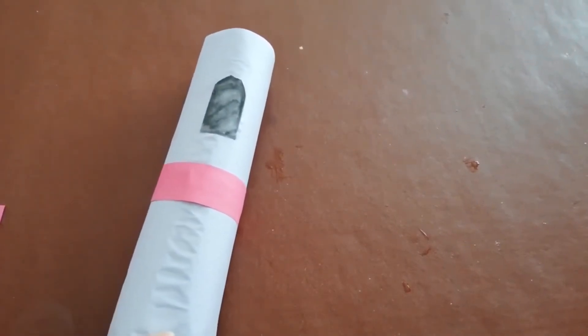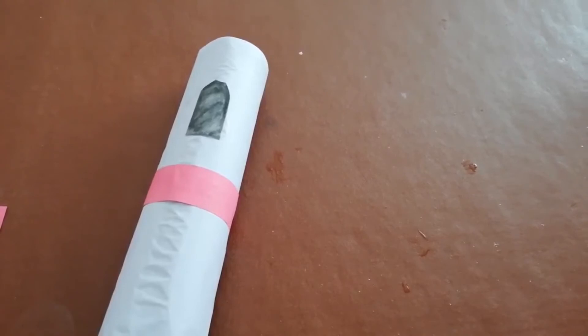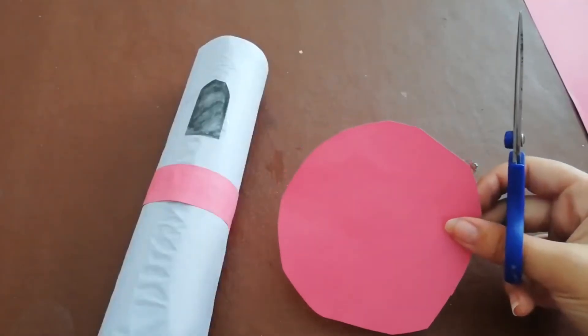All that's left for our tower is we need to do our roof, as we don't want to be getting wet inside. So, to do that, we're going to take our pink piece of paper again, and I'm going to be cutting out a circle shape. Like that.